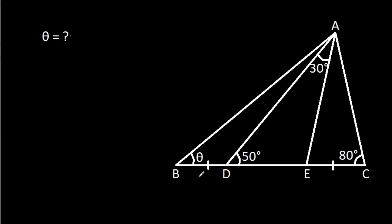In this video, we have been given that BD is equal to CE, angle ADE is 50 degrees, angle ACE is 80 degrees, angle DAE is 30 degrees, and angle ABD is theta. We have to find theta.